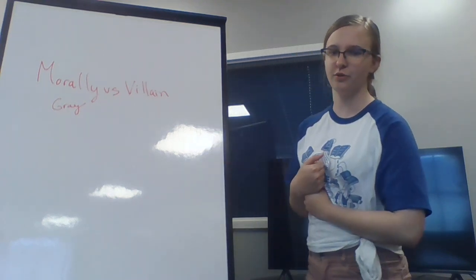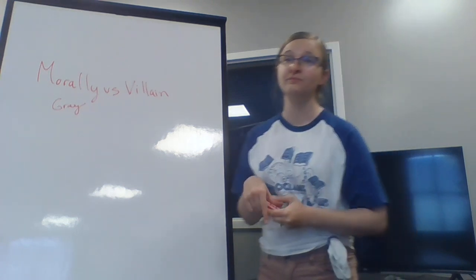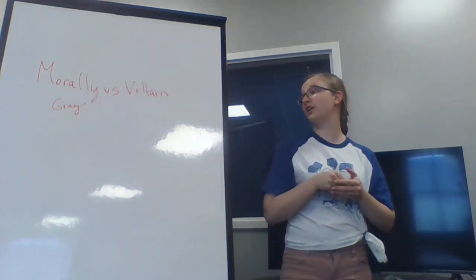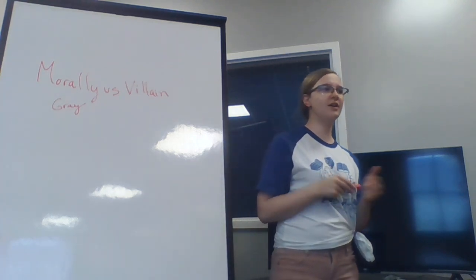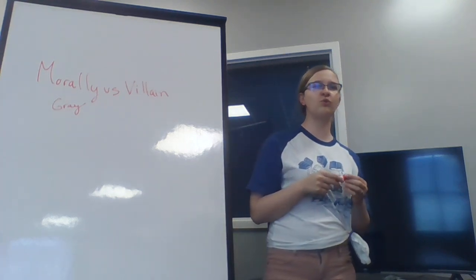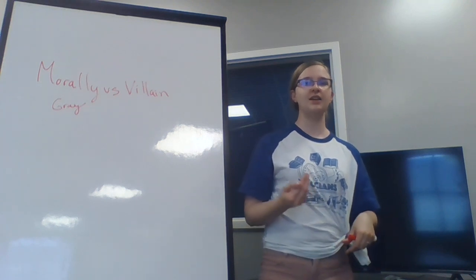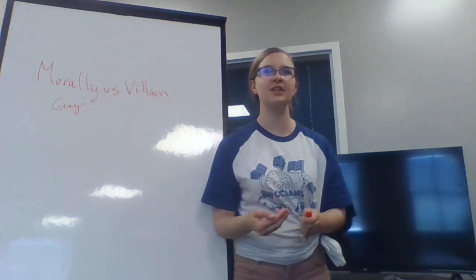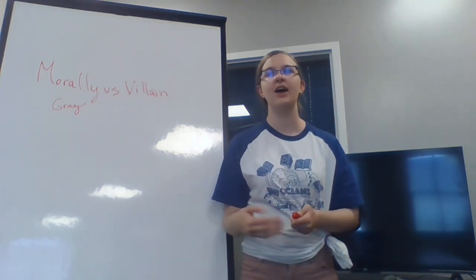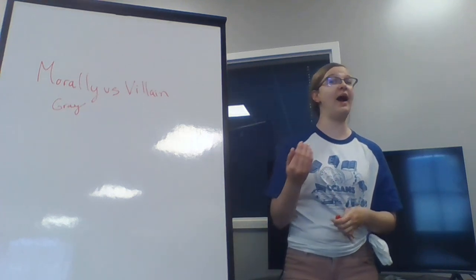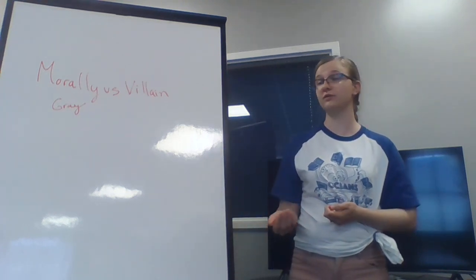The next example for moral ambiguity is Kylo Ren. He starts as a villain, but he becomes more morally gray because you realize he doesn't necessarily want to do all these bad things. He's doing all these bad things because he feels like he has to. And once he realizes he doesn't have to do these bad things, he starts becoming a better person.